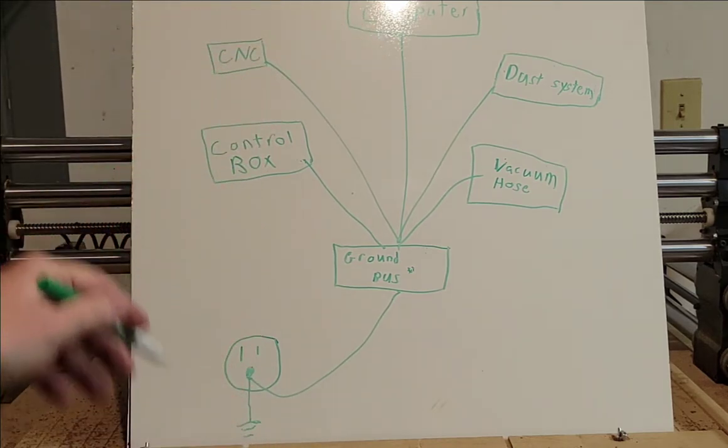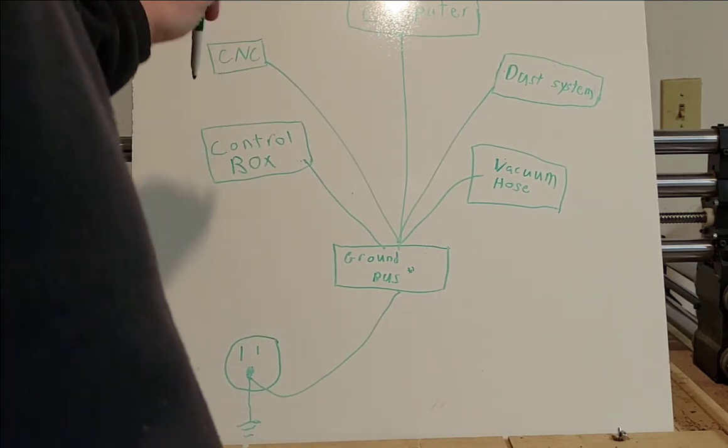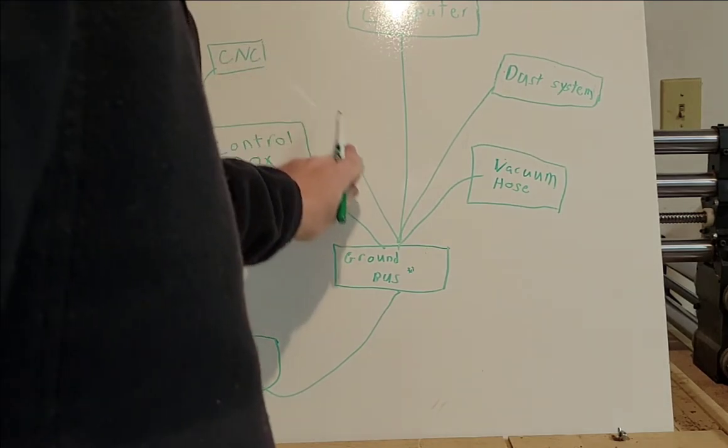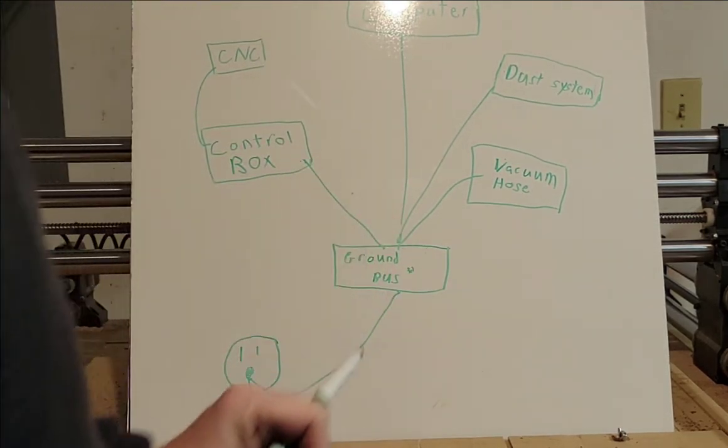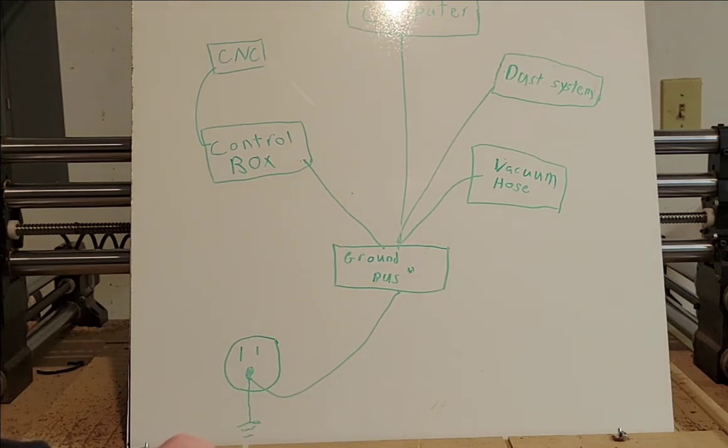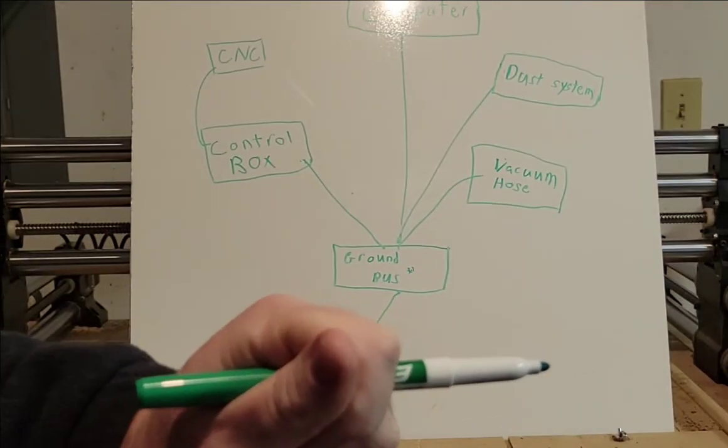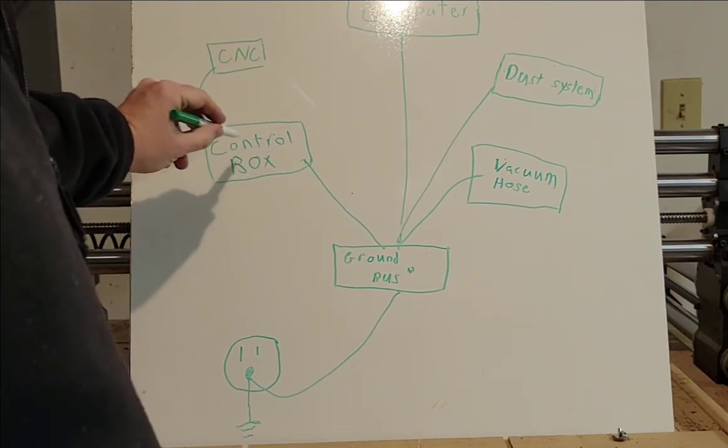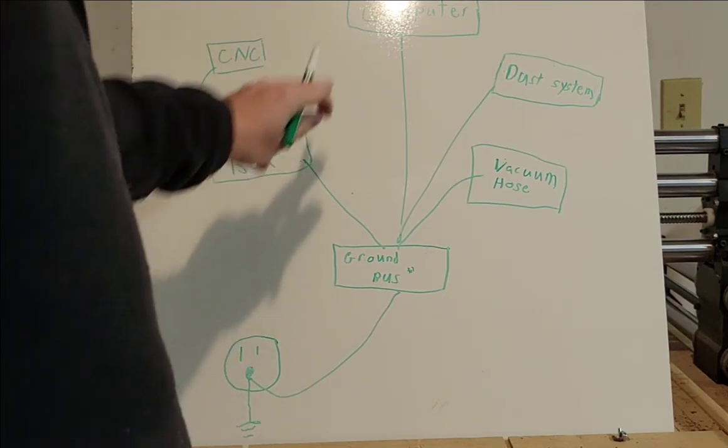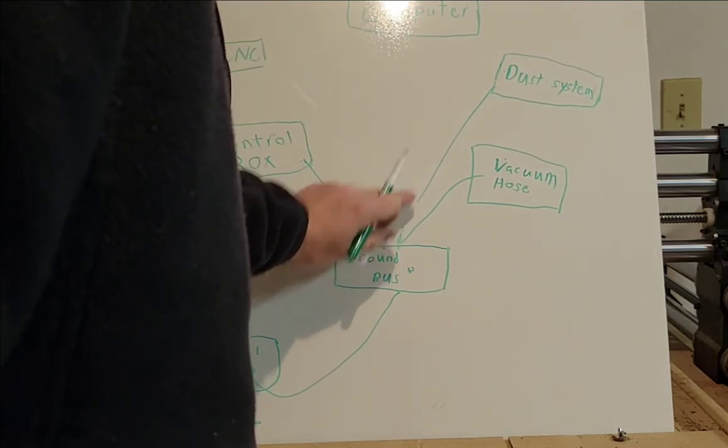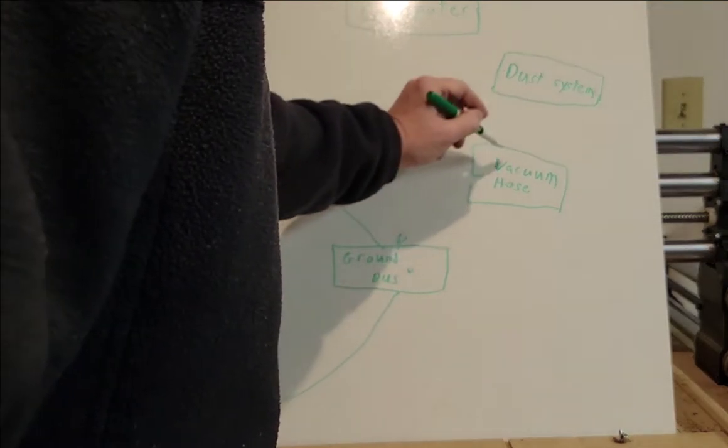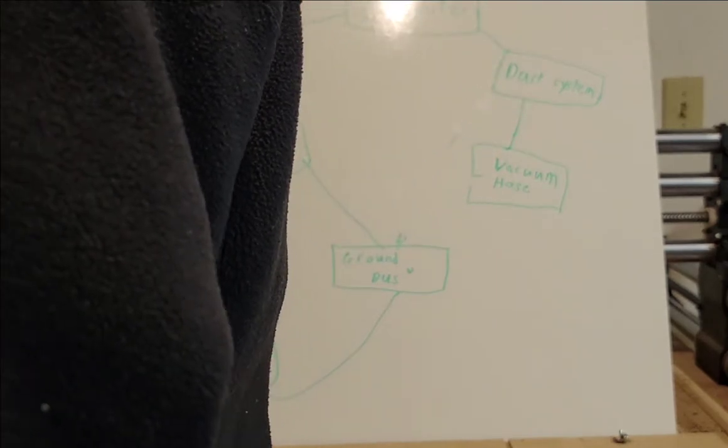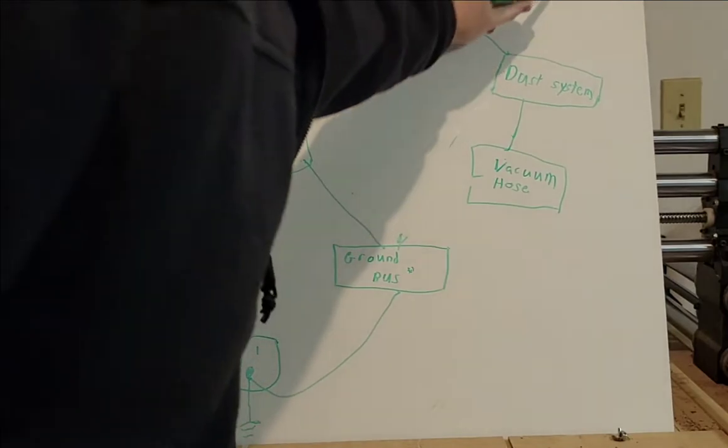...is they'll say 'oh well I need to ground the frame of my CNC' and so they'll ground to here and this will be here. That may or may not work because you don't know what's going on inside here. There's different grounding inside that control box. And what you can wind up with is you'll see people that'll do this and they'll have that tied to that, tied to that, and that is a big no no.